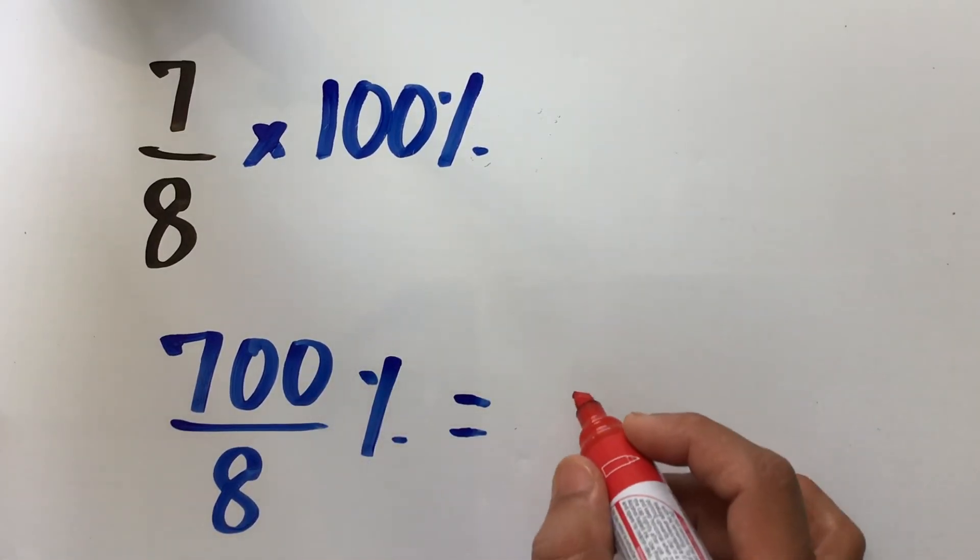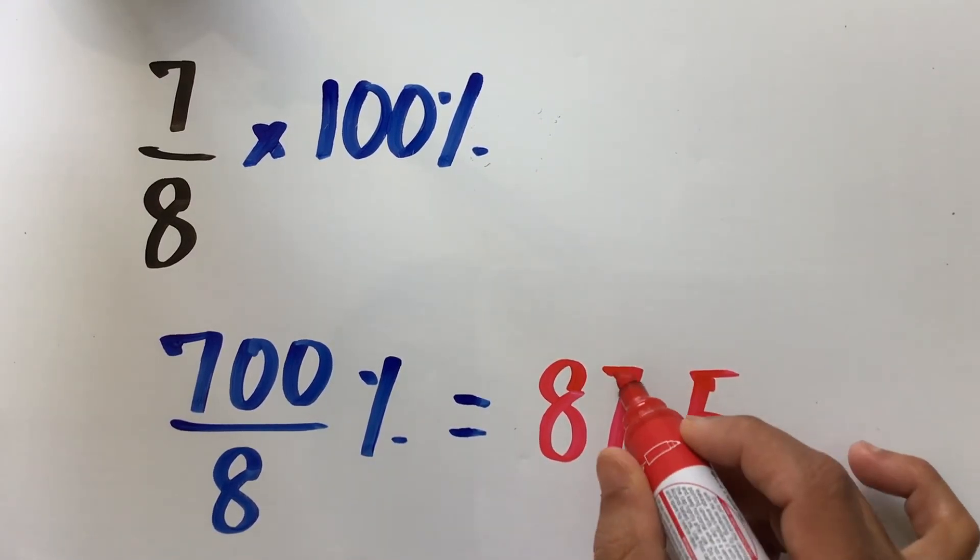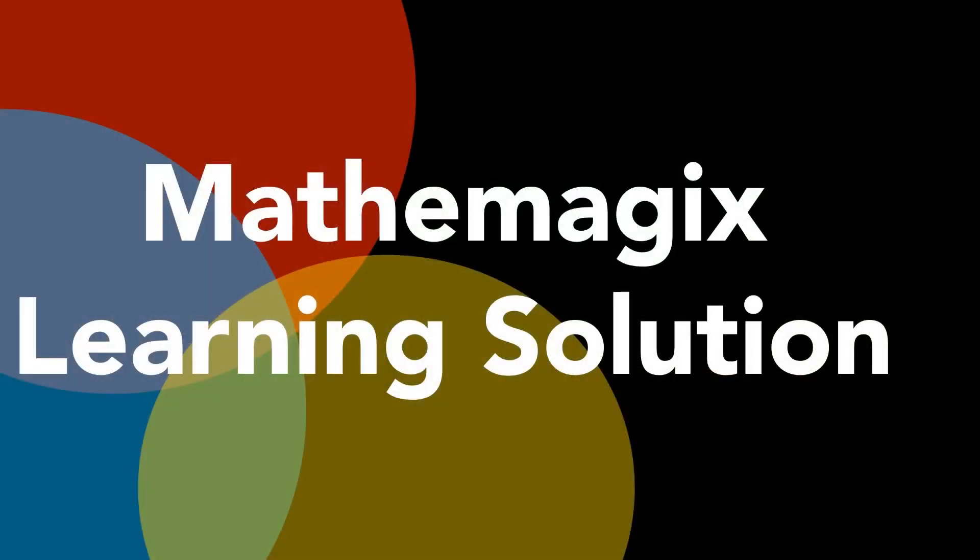We multiply the numerators, which gives us 700 divided by 8 percent. We divide 700 by 8, which gives us 87.5, and that's it, that's your answer. 87.5 percent is same as 7 over 8.